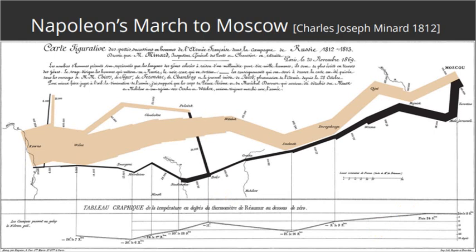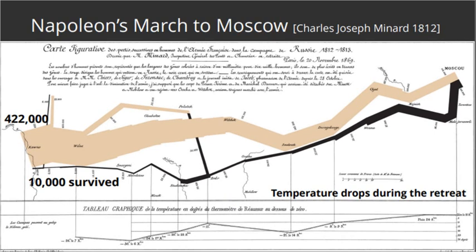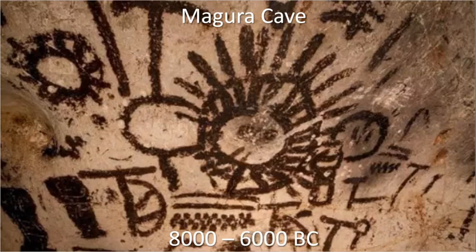They started out with 422,000 troops. Only 10,000 survived. What a genius way to summarize an enormous chunk of history.